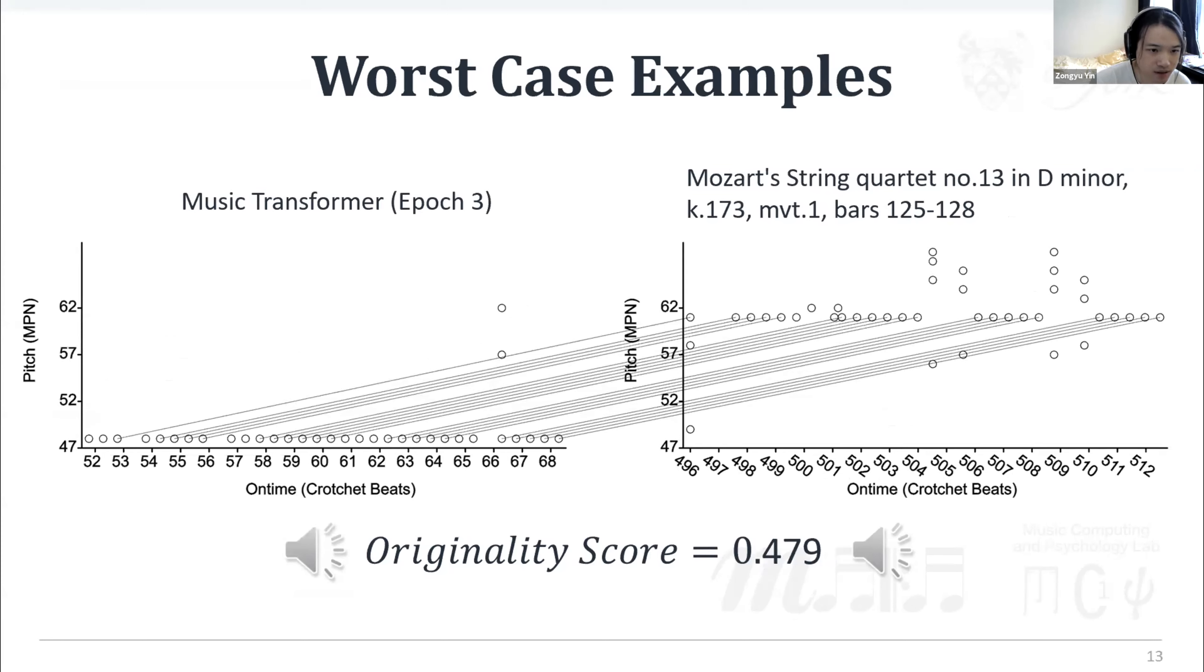This one shows the excerpts generated by the best checkpoint of Music Transformer. As we can see here, the model in the early stage tends to learn the pattern with less distinctiveness, such as a single note repetition. Again, let's first listen to the generated one. And secondly, the original one.